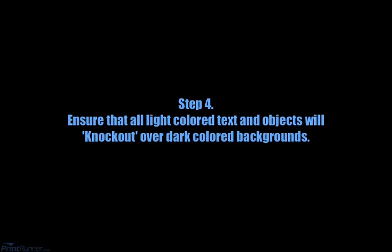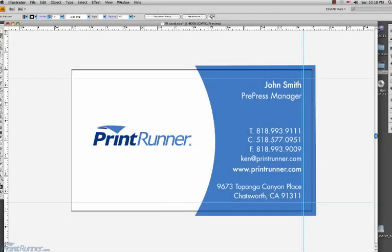Step 4: Ensure that any light colored text or objects are not overprinting. If a colored object such as white or yellow is set over a large black box, Illustrator will usually automatically set the light color to knock out the dark color underneath. However, there are rare occasions due to the way the file was built where the light color will actually overprint the dark color. Basically, what happens in an overprint is that the text will show up very faint or you will not be able to see it at all.